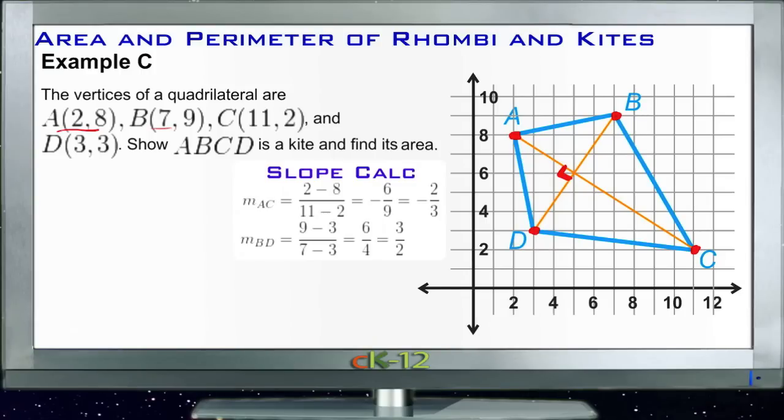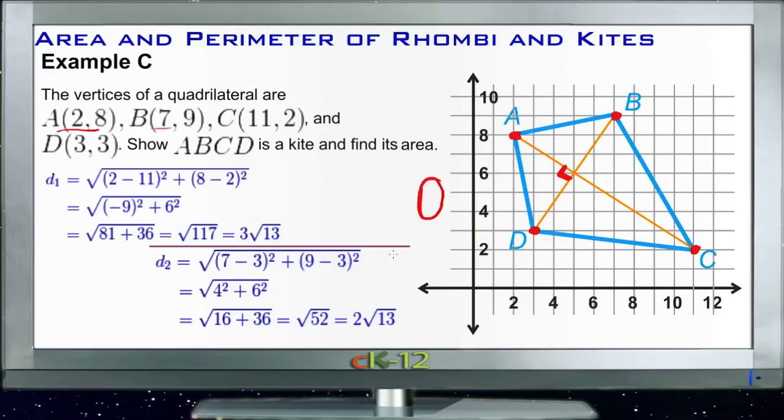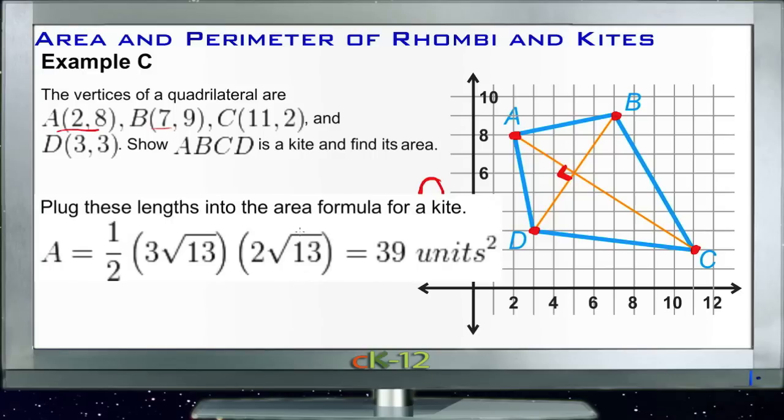And then finally the other thing we need to calculate here is to see what the lengths of those diagonals are. We have one is 3 roots of 13, that's our distance from here to here, and then one that's 2 roots of 13, our distance from here to here. And then finally we take a look at plugging these into the formula for the area of a kite, and we see that it is a kite because our diagonals are perpendicular to each other. And our area then, that length that we calculated and this length that we calculated multiplied together, half of it gives us a total of 39 square units. So yes, it is indeed a kite and its area is 39 square units.